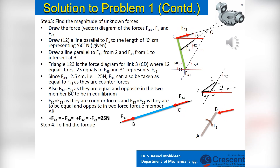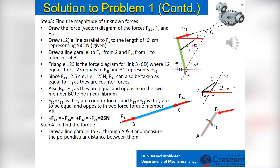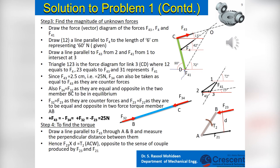Finally, step 4 is to find the torque for equilibrium. Draw lines parallel to F23 through point A and point B and measure the perpendicular distance d between them. Hence T2 = F23 × d, acting anti-clockwise, opposite to the sense of the couple produced by forces F23 and F21. The magnitude of torque needed is found to be 12.5 kNm.